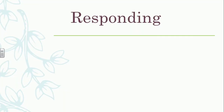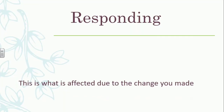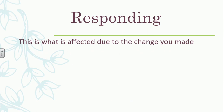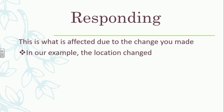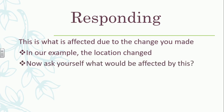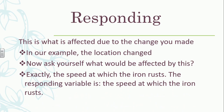Your responding variable is what is affected due to the change you made. When you change the manipulated variable, what is affected by that? In our example, we change the location, and you need to ask yourself: what is affected by the change in location? The answer is the speed at which the iron rusts. Therefore, the responding variable is the speed at which the iron rusts — that is what will be affected by the change in location.